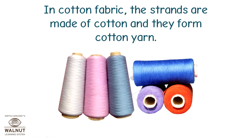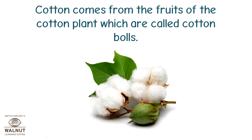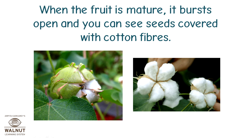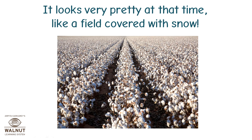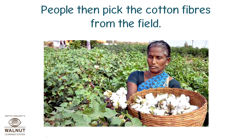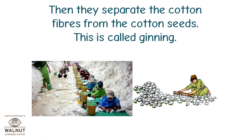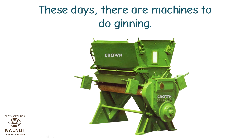In cotton fabric, the strands are made of cotton and they form cotton yarn. Cotton comes from the fruits of the cotton plant, which are called cotton balls. When the fruit is mature, it bursts open and you can see seeds covered with cotton fibres. It looks very pretty at that time, like a field covered with snow. People then pick the cotton fibres from the field and separate the cotton fibres from the cotton seeds. This is called ginning.